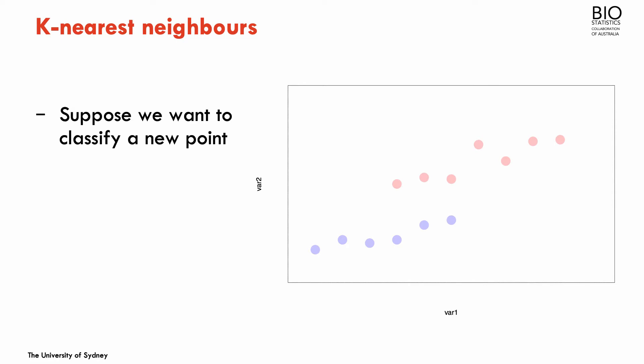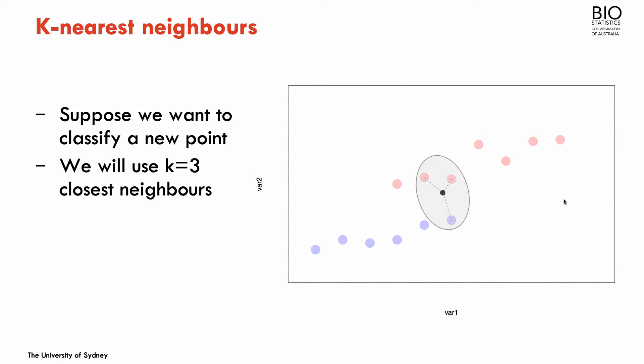Suppose that we have two predictors, var1 and var2, and we want to classify the blue and the red categories using some observed data. If I have a new observation and I want to classify this new dot, I would use some of its neighbors — let's say three of its neighbors — and I would classify it according to the majority category among those neighbors. So in this case, this new observation would be classified as a red dot. Another observation here would be classified as a blue dot because the majority of its neighbors are also blue.